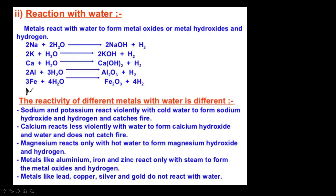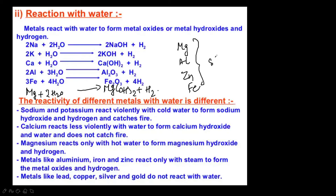Magnesium does not react with cold water — it reacts only with hot water: Mg + 2H₂O → Mg(OH)₂ + H₂. Magnesium actually starts floating on the surface of water due to hydrogen gas bubbles sticking to it. Metals like magnesium, aluminium, zinc, and iron react with steam. Tin and lead react with superheated steam with great difficulty. Copper, mercury, silver, and gold do not react with water or steam at all.